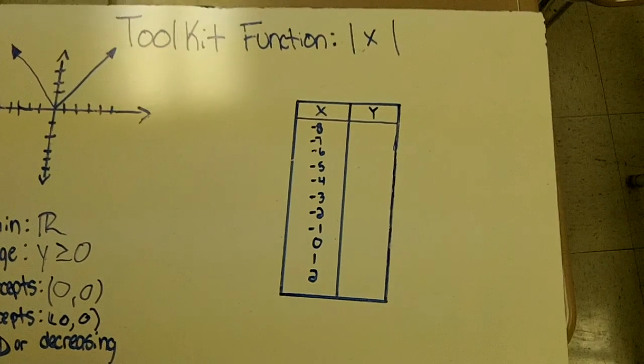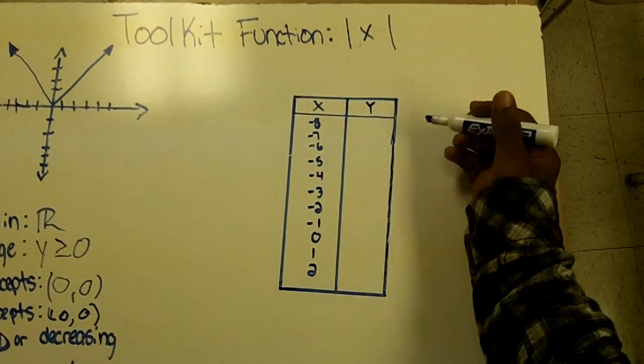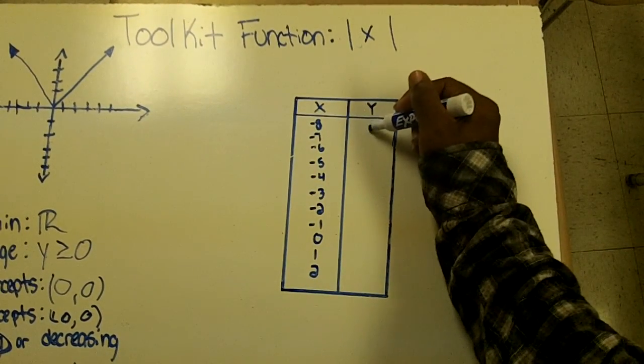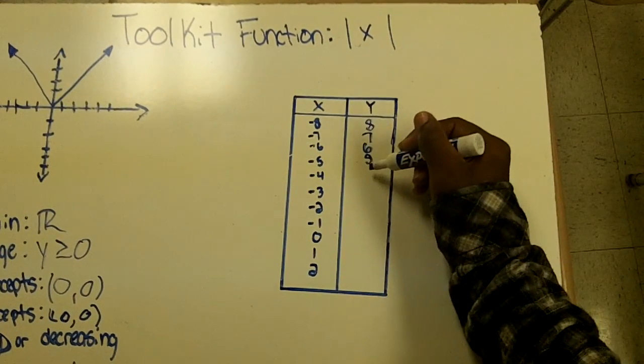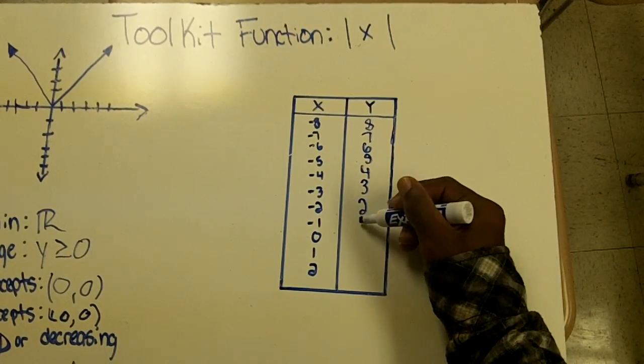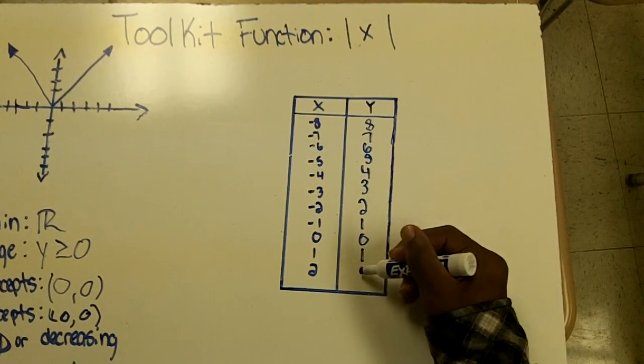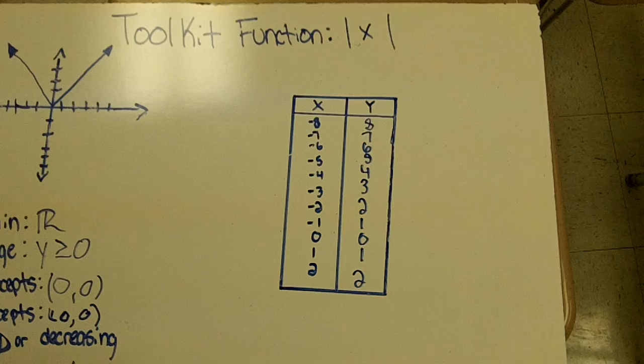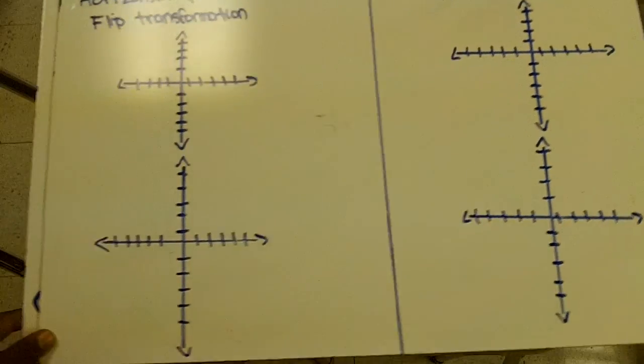Since it's absolute value in the function, the absolute value makes every number positive, so it's eight, seven, six, five, four, three, two, one, zero, one, and two.